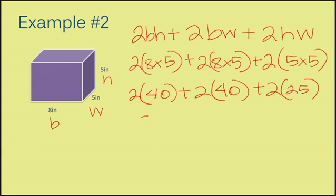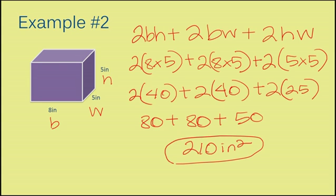Now, I'm going to multiply my 2 by my number inside my parentheses. 2 times 40 is 80, plus 2 times 40 is 80 again, plus 2 times 25 is 50. So now I have 80 plus 80 plus 50, and that is 210. My units here are inches and squared.